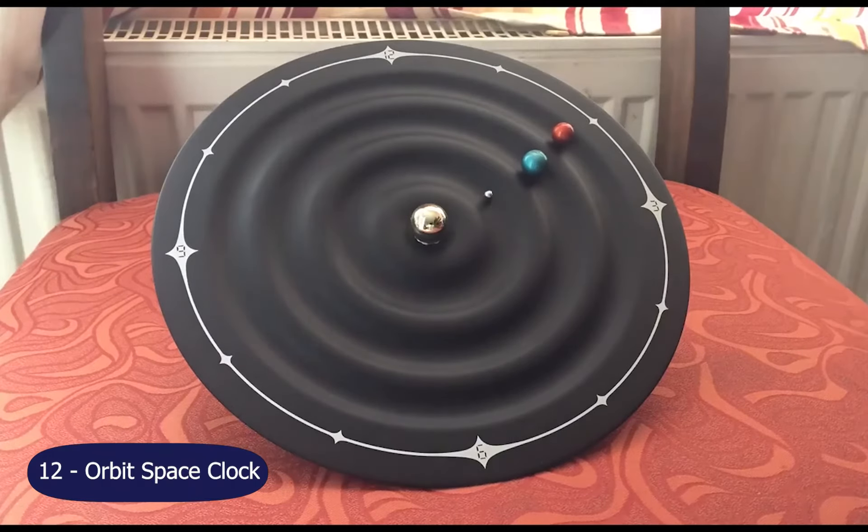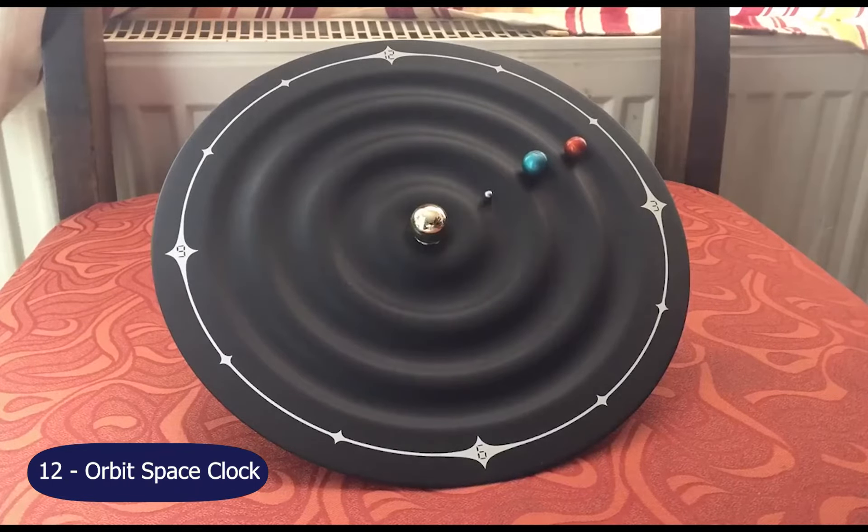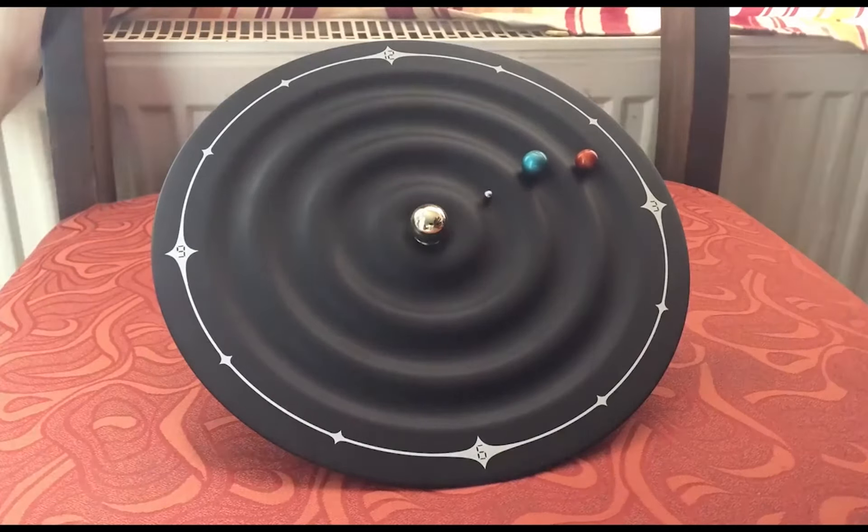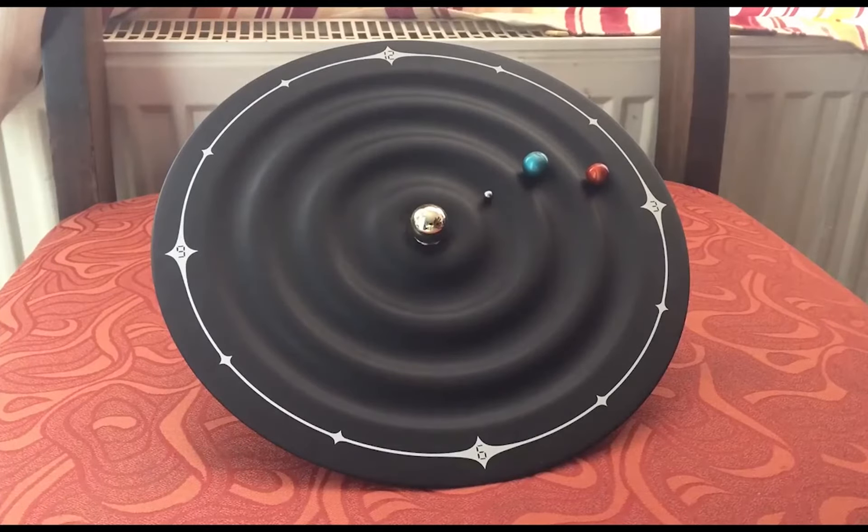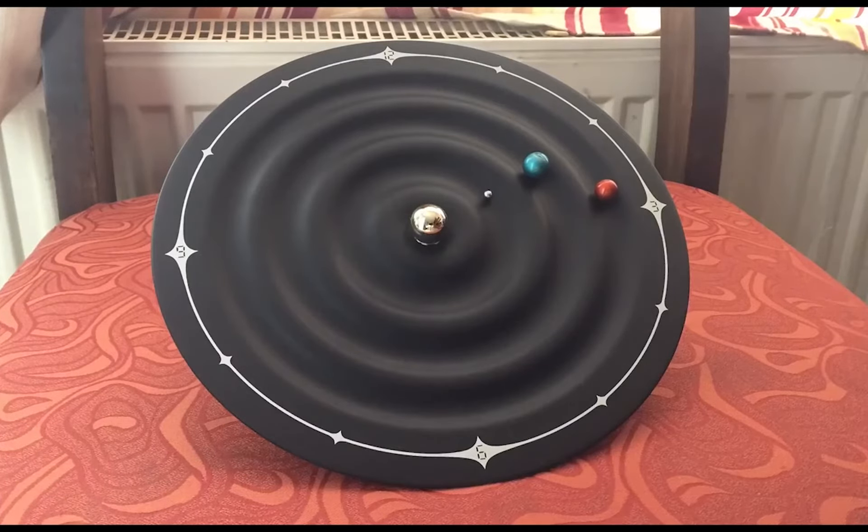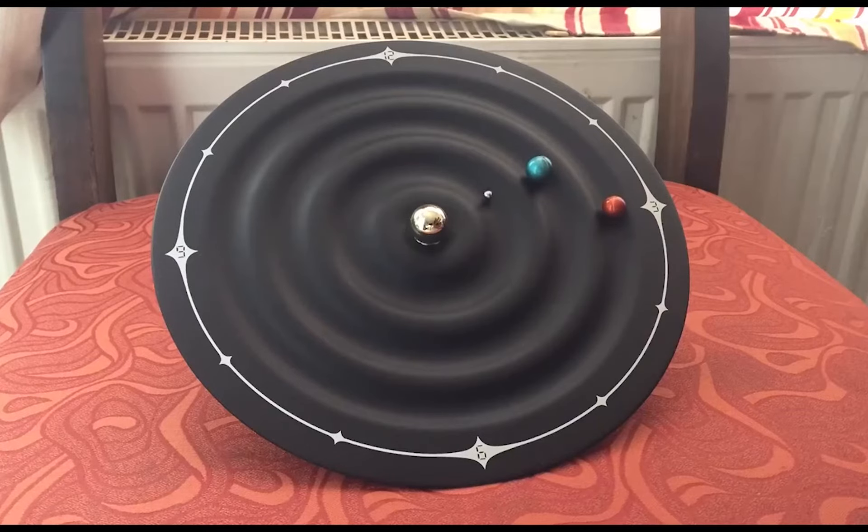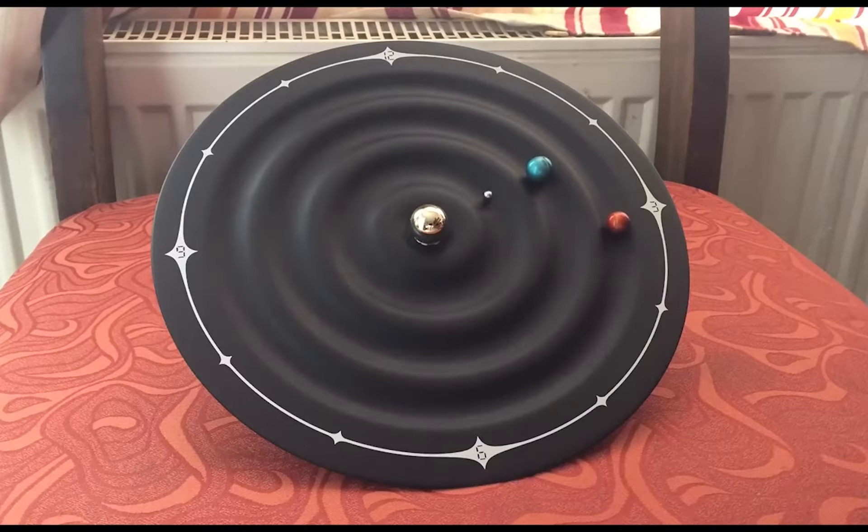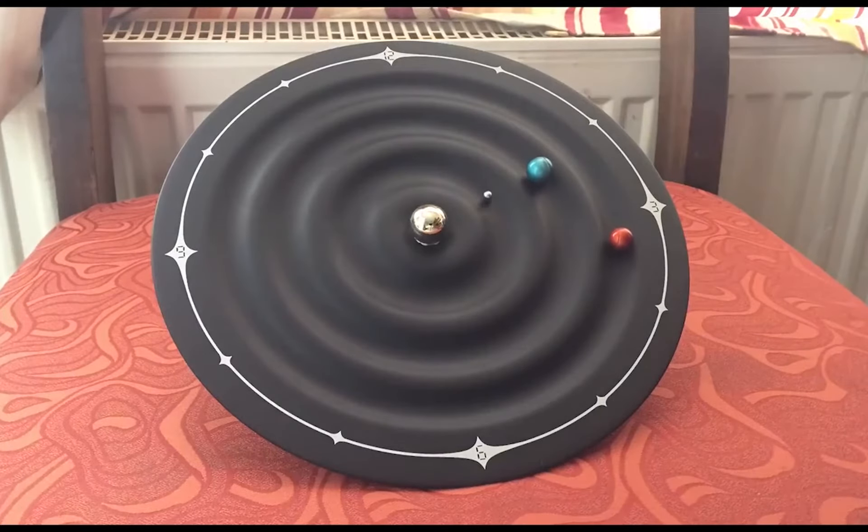Number 12, the Orbit Space Clock. Orbit Space Clock works using magnetism. Time is shown using three colored metal spheres simulating outer space and each ring shows hours, minutes and seconds separately.